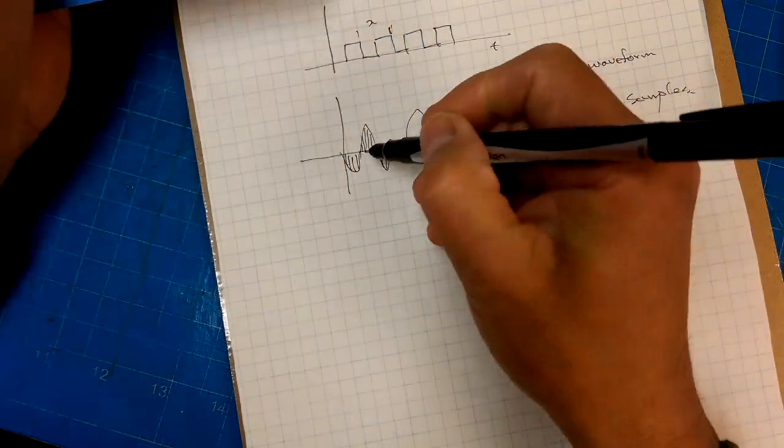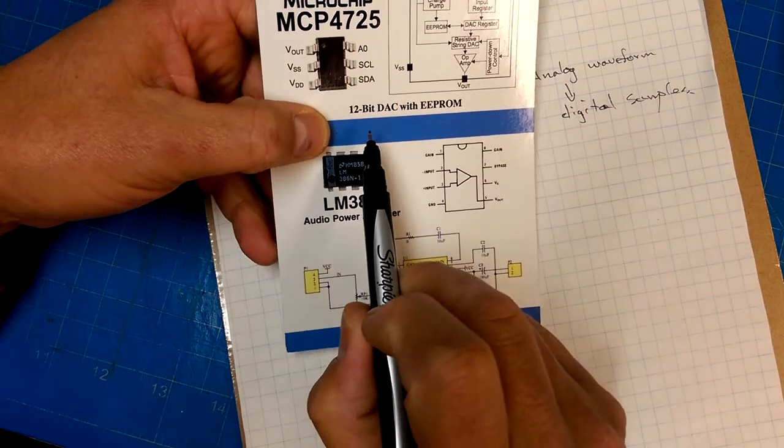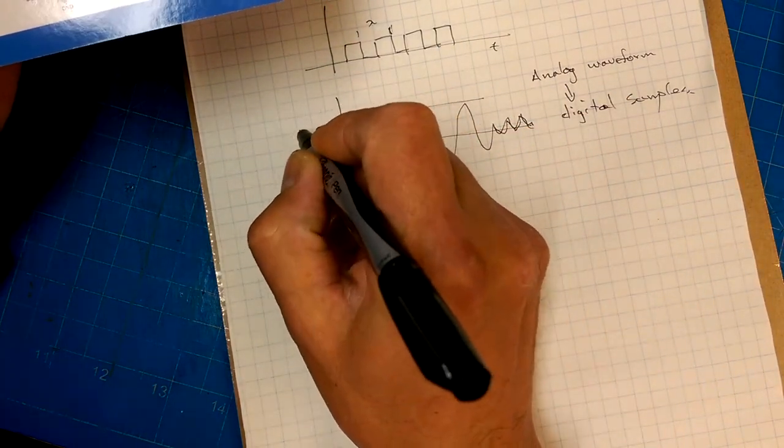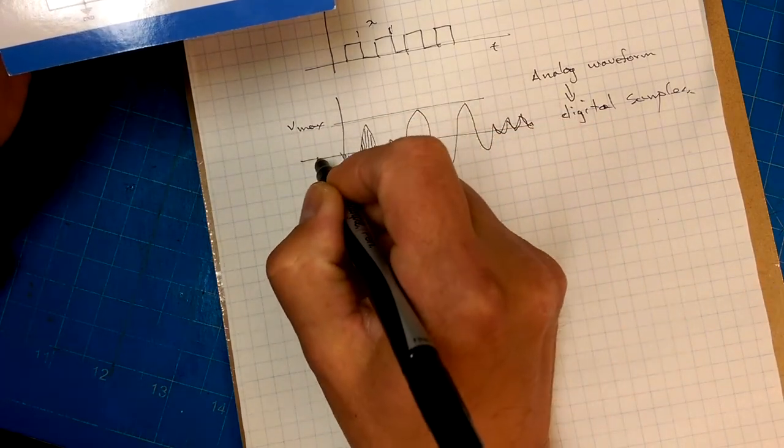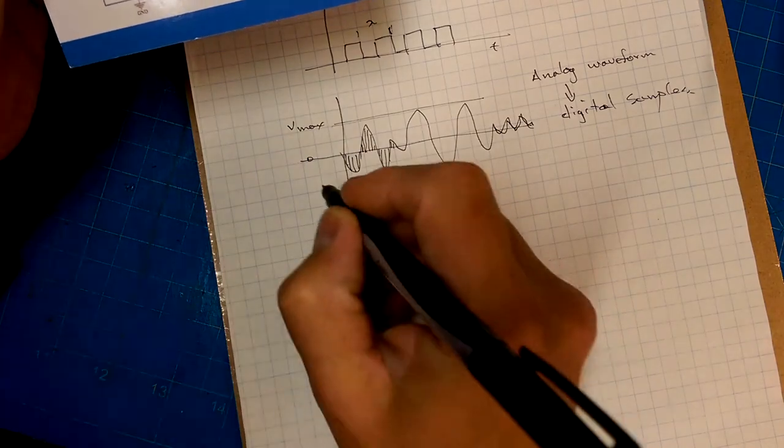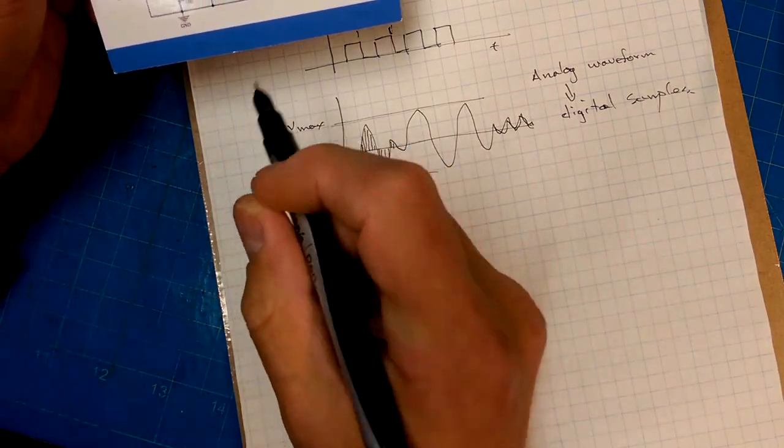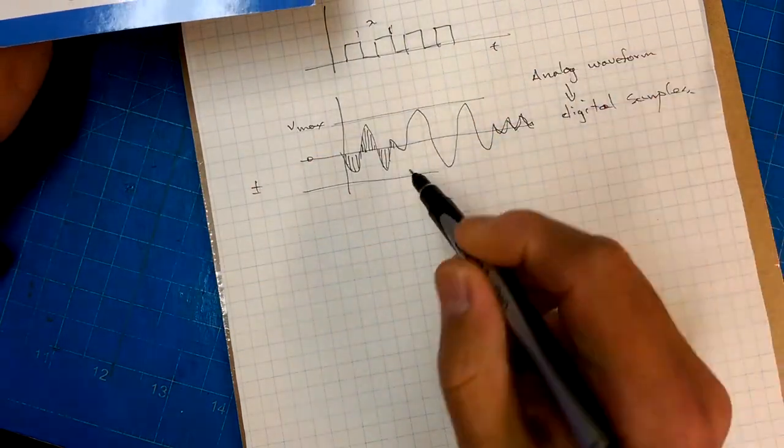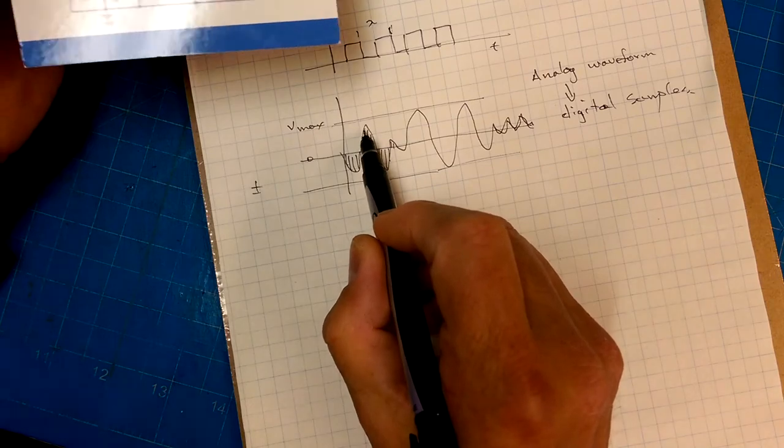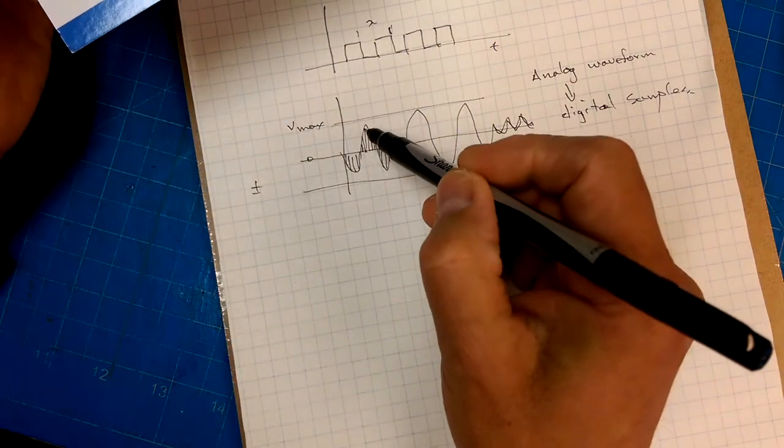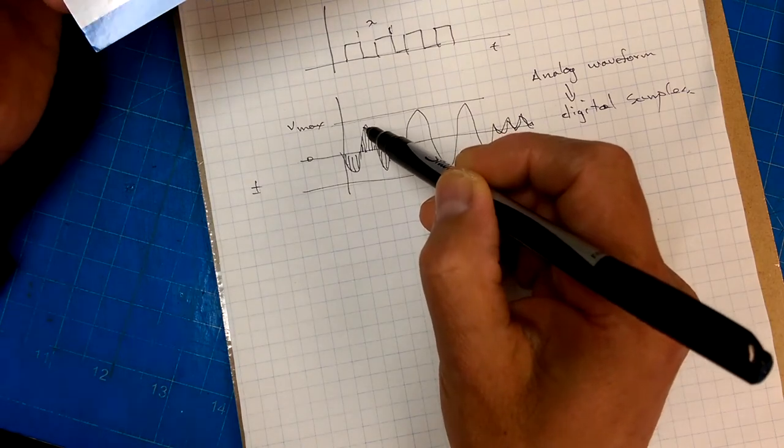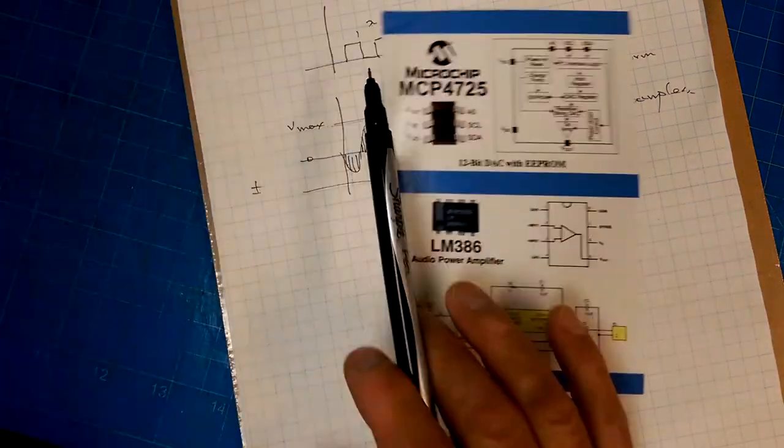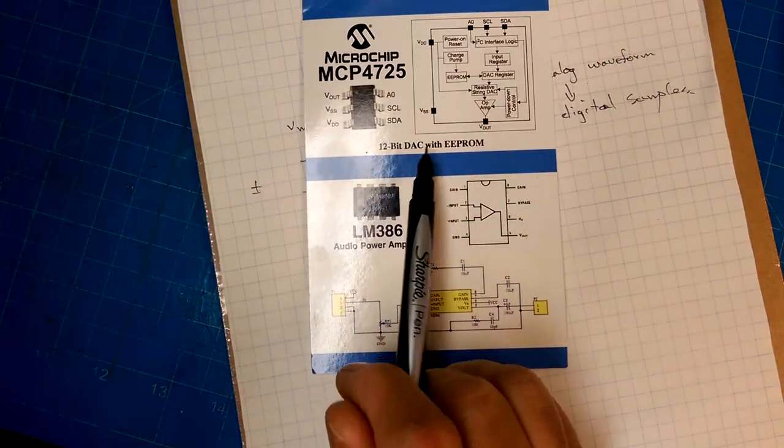The number of samples that you take will influence how much fidelity you can get from a particular waveform or how accurately you can represent that waveform in your digital signal. One of the chips that they provide is the MCP4725, which is a digital-to-analog conversion chip with EEPROM, and it's 12 bits. So each sample is storing 12 bits of data, 4096 different values. We're taking a 12-bit integer and using that to represent a particular point in time on this waveform and what amplitude that waveform has.